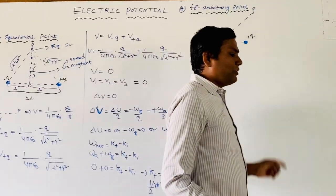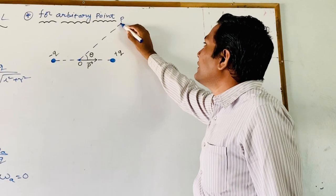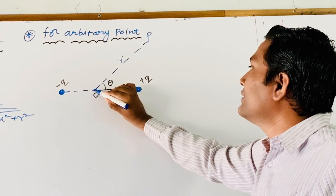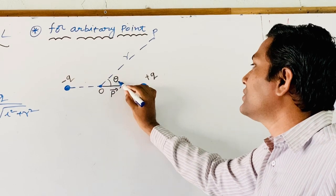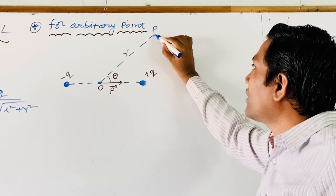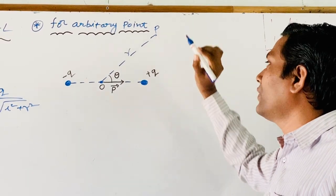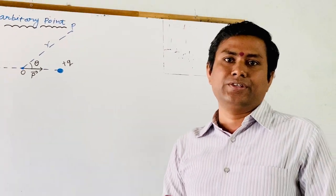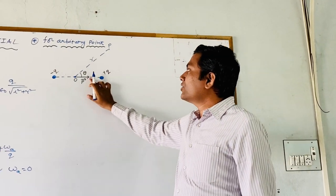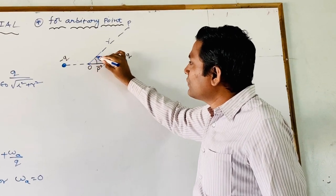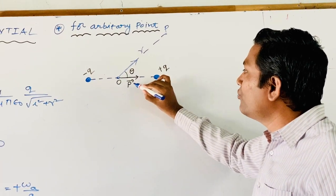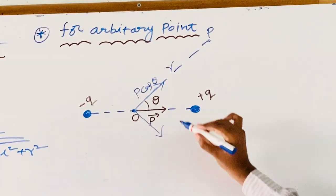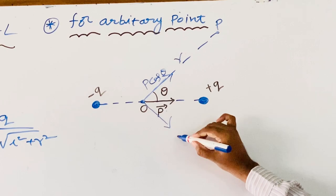Now, consider one more situation. There is a point P at some distance R from the center O of the dipole, and the line OP makes an angle θ with the orientation of the dipole. We need to calculate the electric potential at this arbitrary point. The electric dipole moment is a vector, and any vector can be resolved in any direction. In our case, we resolve the dipole moment P̄ into two components: P cosθ along OP, and P sinθ perpendicular to OP.